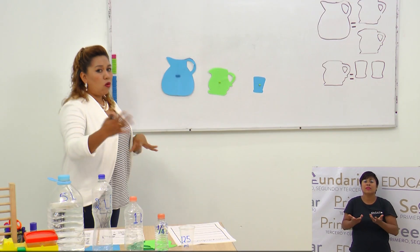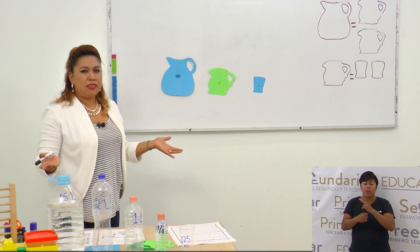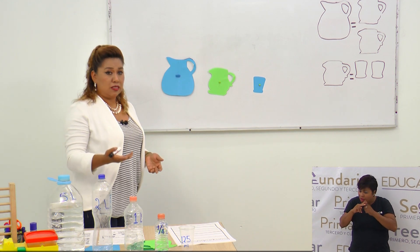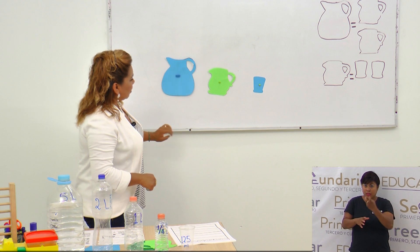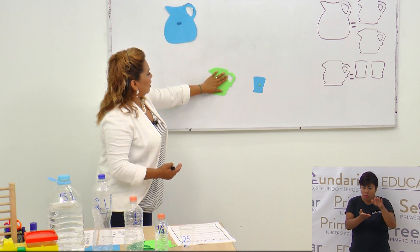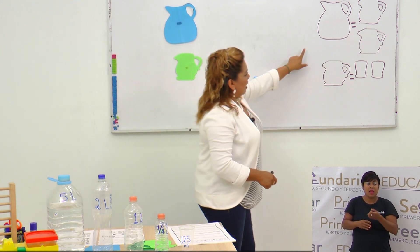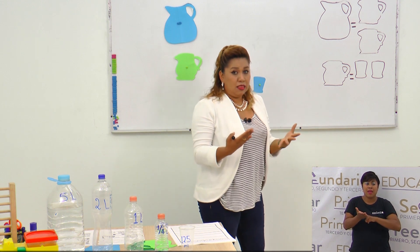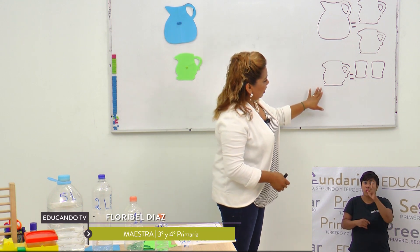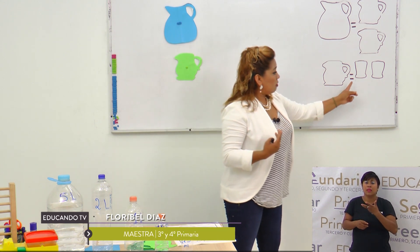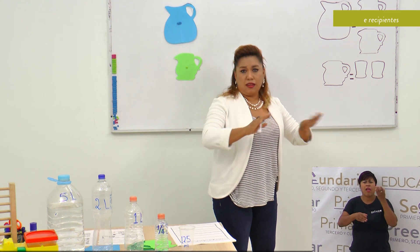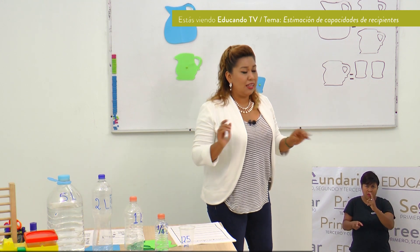Vamos a hacer un pequeño juego, porque al final de cuentas las matemáticas son eso: poner a jugar tu razonamiento, tu cálculo, tu estimación. Tenemos aquí una jarra grande a la que le caben dos jarras medianas, y a una jarra mediana le caben dos vasitos — puede ser de agua, refresco, atole, café, cualquier líquido.